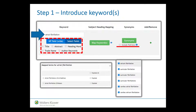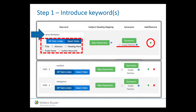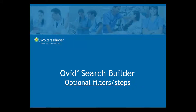If required, the Include PubChem option can provide additional synonyms from the world's largest open source chemical database. Should it be required, users can search for additional keywords. Click on the Add icon to repeat the keyword process for the next term. The Ovid Search Builder is particularly adept at building PICO clinical questions.